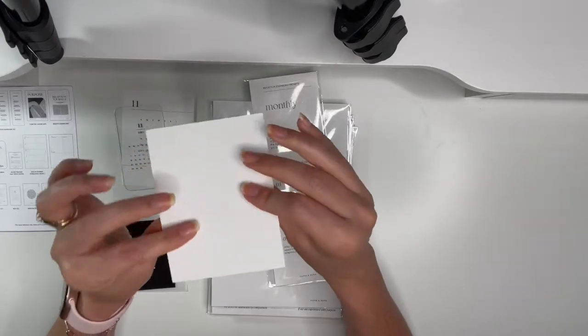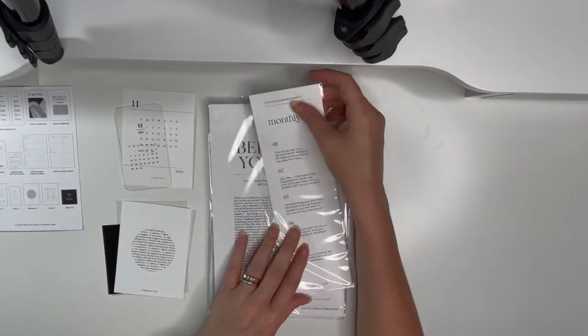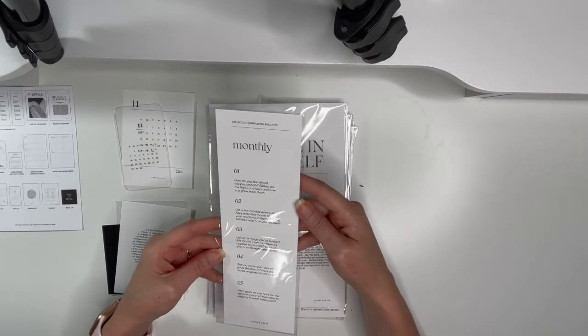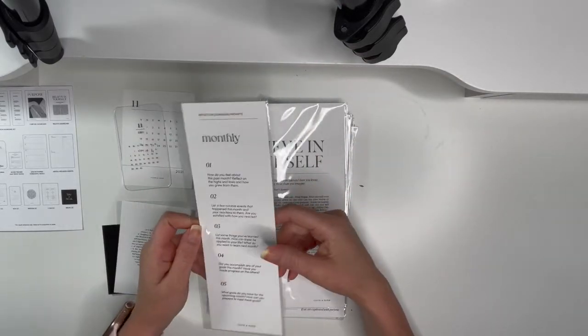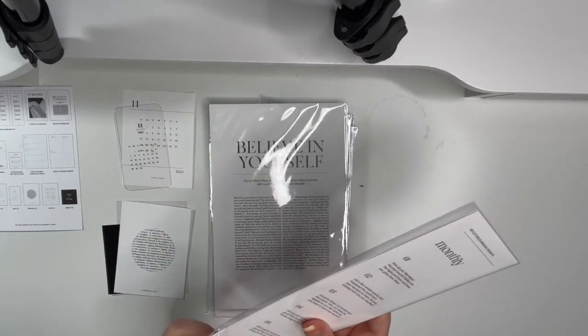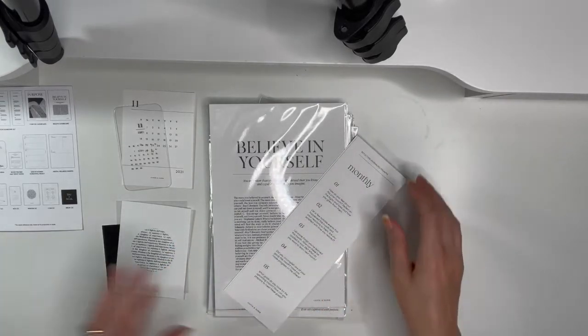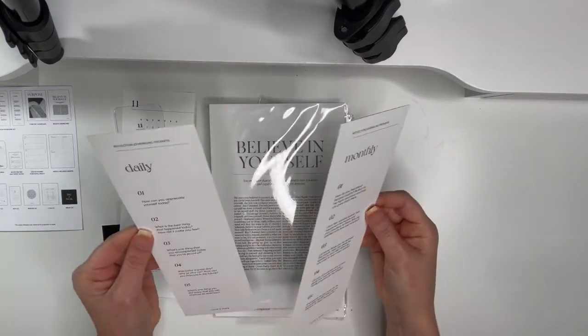And it's nice and soft, so that's neat. Okay, so we have a reflection journaling prompt. This is kind of neat. All right, let's open it up. So it feels like a good quality card stock. Oh, is there two?